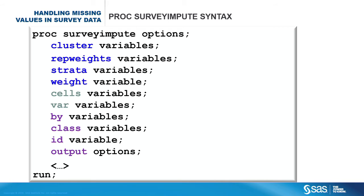This is the syntax for Proc SurveyImpute. Like all the other survey procedures, Proc SurveyImpute also supports the cluster, rep weights, strata, and weight statements. Use the cells statement to specify the imputation cells. Imputation cells define a partition of the data such that observations within the same cell are similar. For example, if you believe that income for males is different from income for females, then you partition the data by gender and perform independent imputations for males and females. You must specify the var statement. Missing values will be imputed only in the variables that you specify in the var statement.